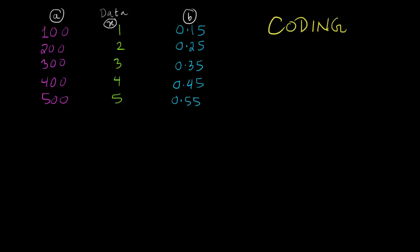With coding, what we can do is make the data more manageable. For example, if you want to make this number more manageable for doing statistics, we can just divide by 100 and it becomes 1, 2, 3, 4, 5. So if we take this data and divide by 100, we get this data x. So we can say x equals to A divided by 100 and this is a form of coding.